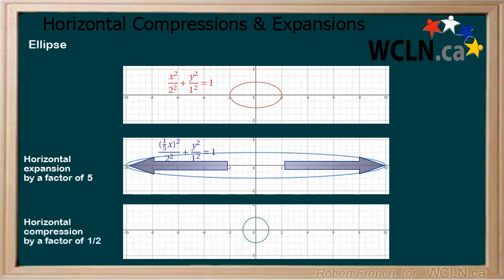Next, we will apply a horizontal compression to the original ellipse by a factor of 1 half. We do this by multiplying x by 2, and we can see how the graph changes accordingly.